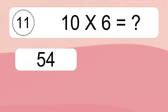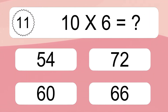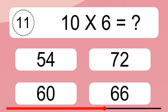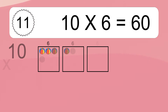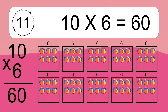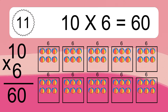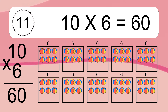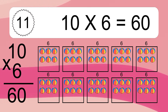10 times 6 equals 60. We have 10 boxes and each box has 6 colorful balls inside. If you count all the balls in all the boxes together, you will have 10 times 6 balls. This equals 60 balls.